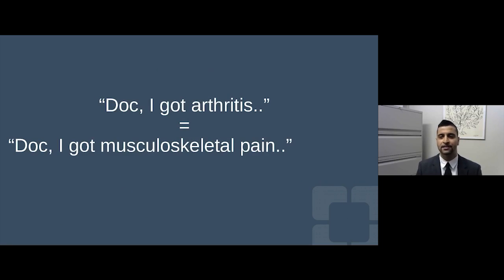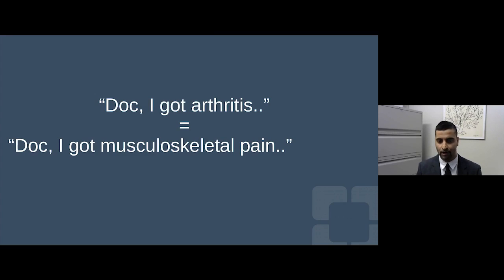When a patient presents to my office and says they have arthritis, to me that really means they have some sort of musculoskeletal pain. The question becomes: what is the etiology? Arthritis is kind of a catch-all phrase for muscle pain, bone pain, and tendon pain. We need a focused exam and history to figure out the exact etiology so we can get the correct treatment algorithm going.